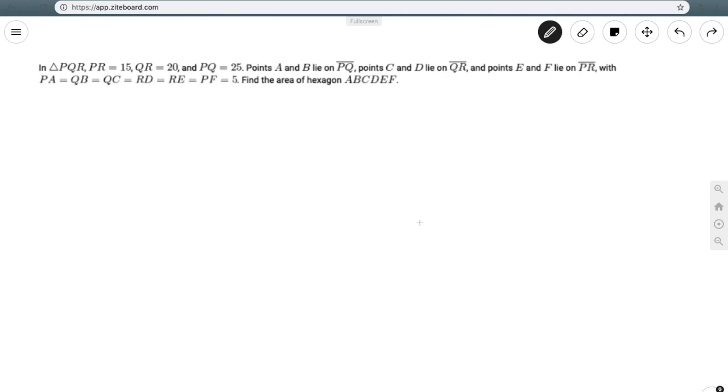The problem reads: in triangle PQR, PR equals 15, QR equals 20, and PQ equals 25. Points A and B lie on PQ, C and D lie on QR, points E and F lie on PR, with PA equals QB equals QC equals RD equals RE equals PF equals 5. Find the area of hexagon ABCDEF.